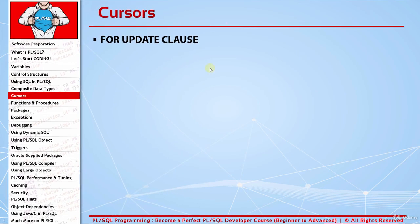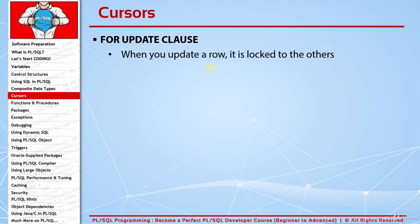In this lecture you will learn how to use the FOR UPDATE clause of cursors. From the SQL lessons, you know that when you update a row it's automatically locked to any changes by other users — no one can touch the row you updated until you commit or roll back.